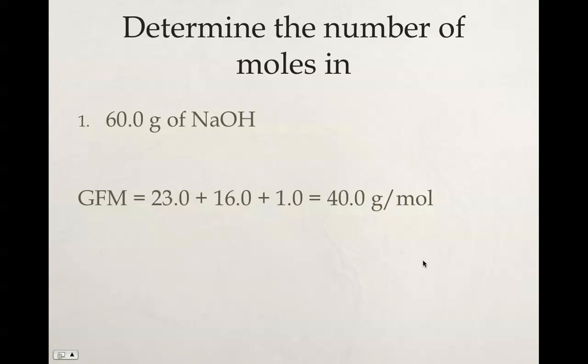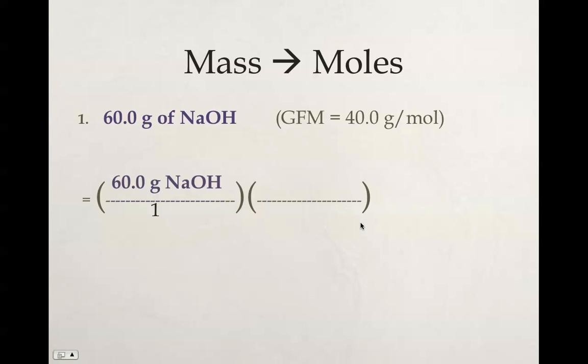So our first example, we're going to be determining how many moles we have in this sample of 60 grams of NaOH. I first have to determine what the GFM is. You would look up the Na, O, and H. We have one of each, so our GFM is 40 grams per mole. What that means is that 40 grams is equal to 1 mole of NaOH.